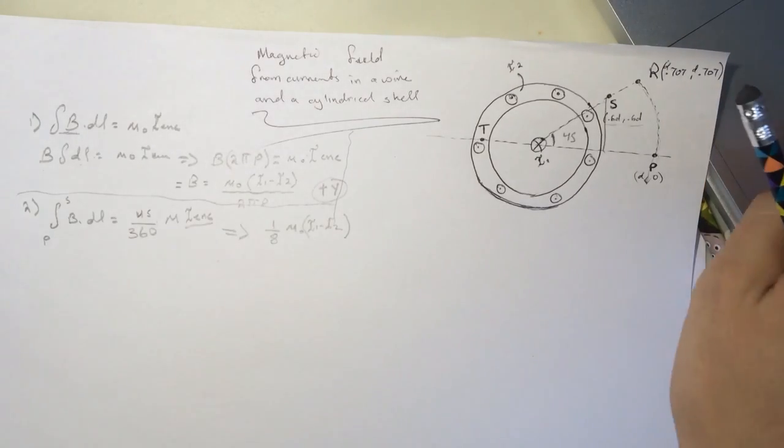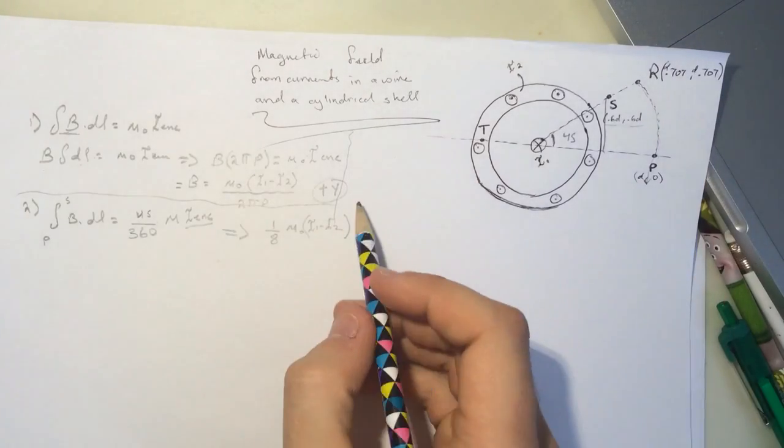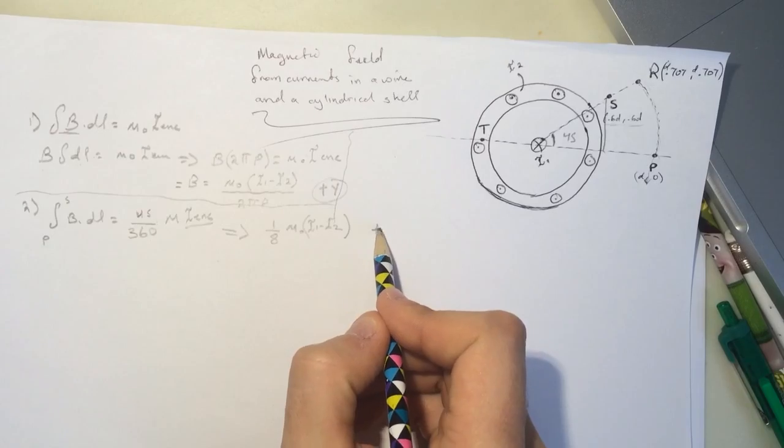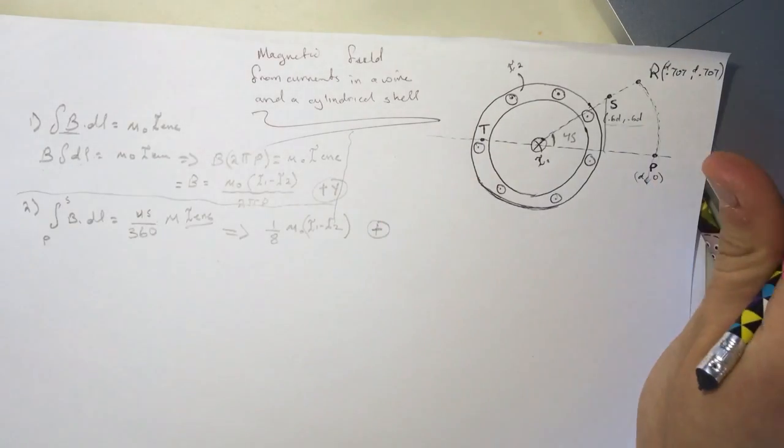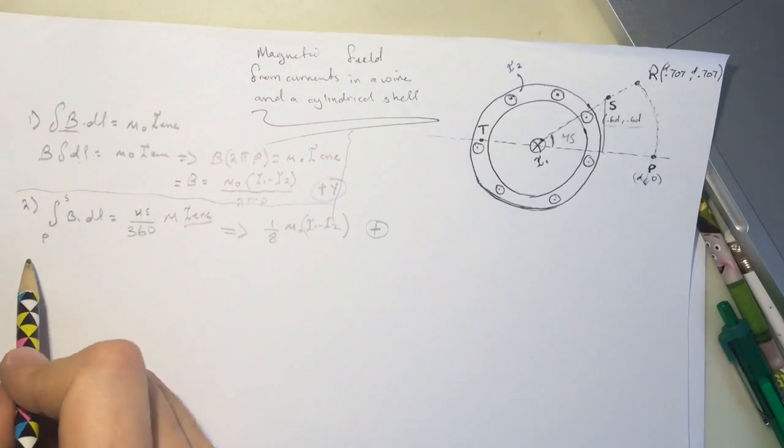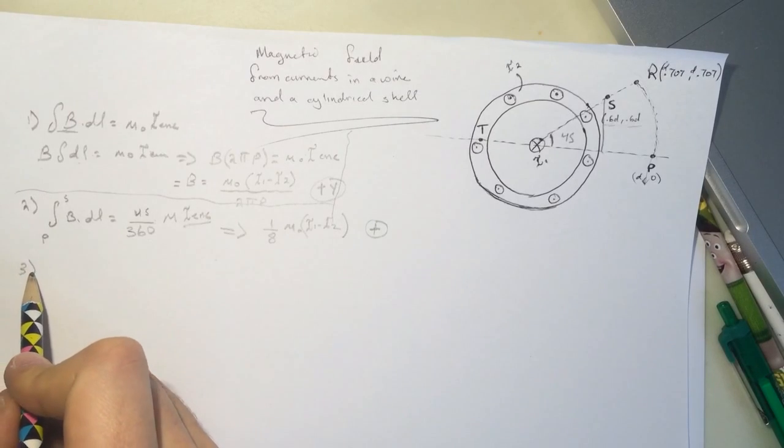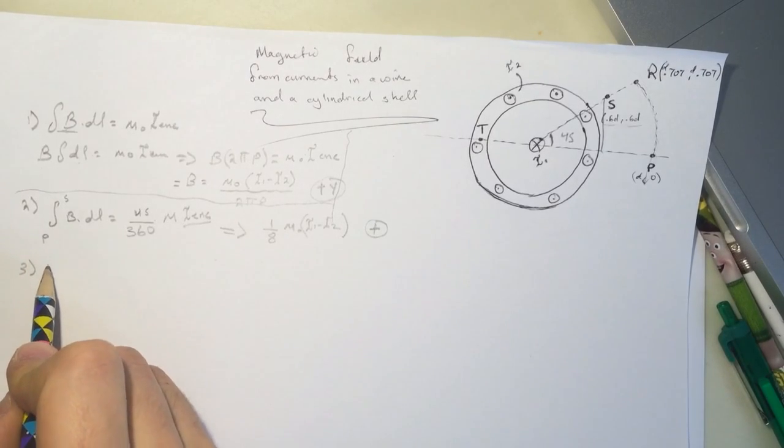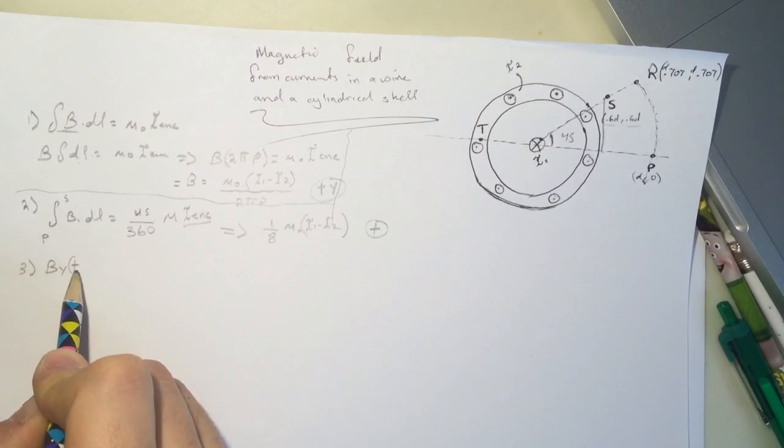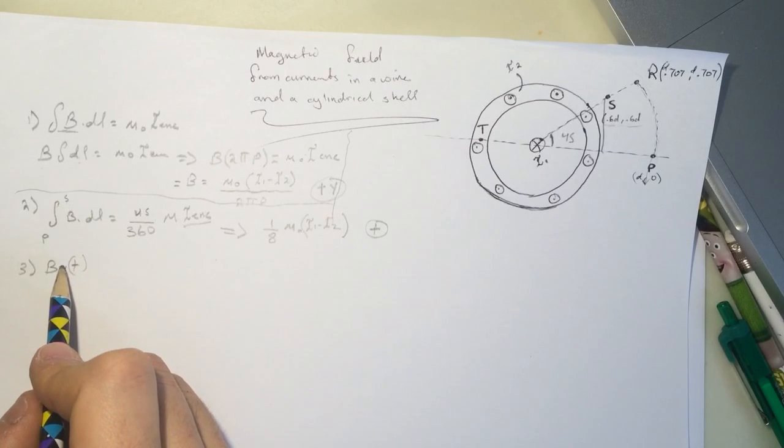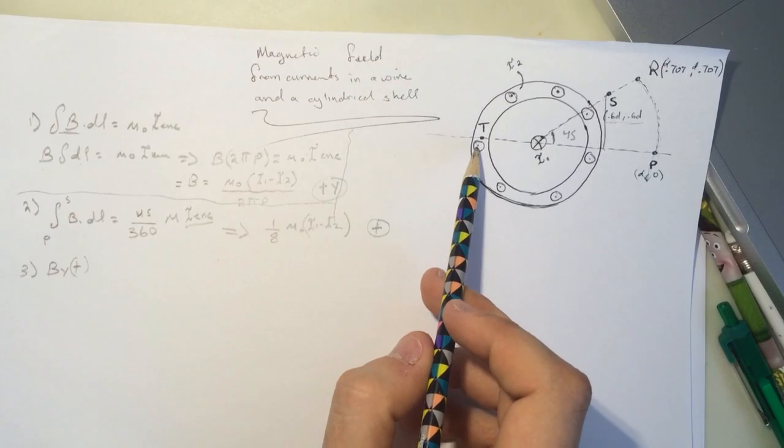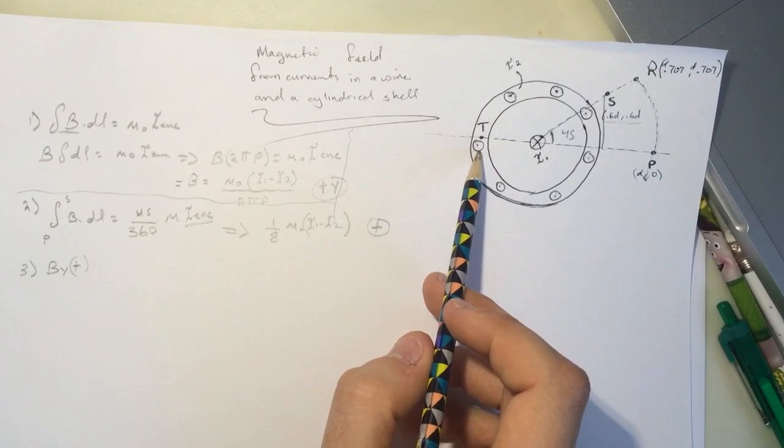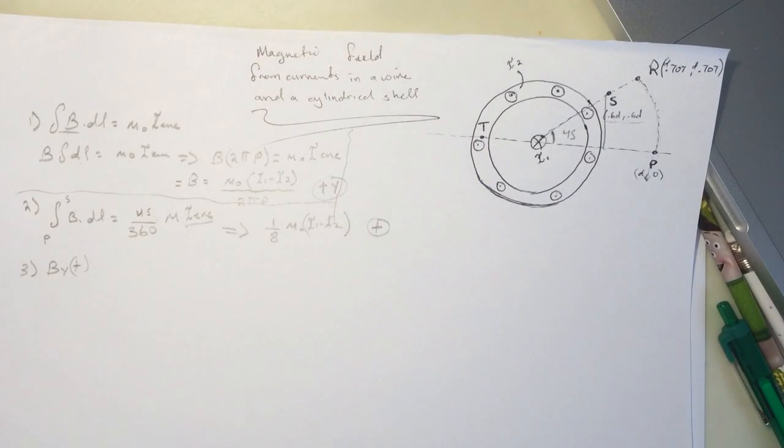Cool. I got a positive number for this. Okay, let's go down. So number three is asking, what is By at T? So they want the y component of the magnetic field at point T here. Alright, so let's go through this.